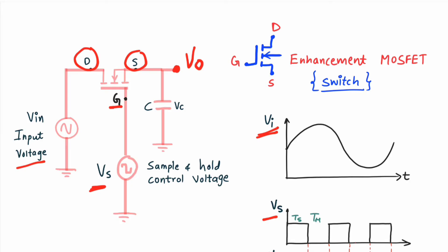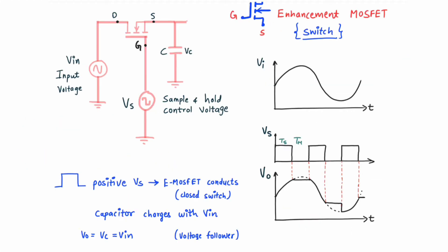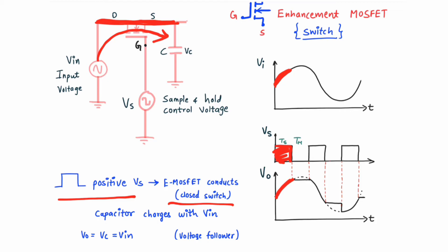Now we will see the working. When there is a positive Vs — meaning we are in this part of the cycle — the E-MOSFET conducts; it acts as a closed switch because it gets a positive pulse. So this path is now closed. The MOSFET starts conducting, acting as a closed switch, and the capacitor is now charging with Vin voltage. So the capacitor voltage Vc is directly following Vin.